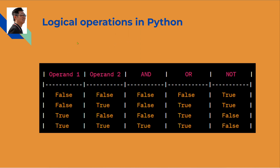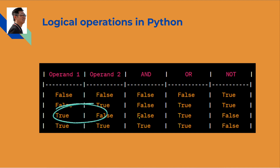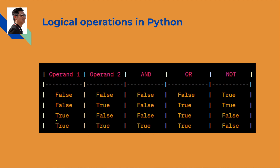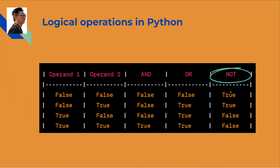Looking at the logical truth table: the first operand and second operand. If the first operand is false AND the second is false, the result is false. False AND true gives false. True AND false gives false. True AND true gives true. For OR: false OR false gives false. False OR true gives true. True OR false gives true. True OR true gives true.